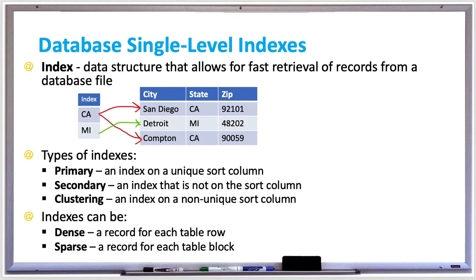Inserts, updates, and deletes to tables have an impact on single level indexes. With an insert, since a new row is added to the table, a new index entry needs to be created and placed in the right location. This involves moving things around, which could be time-consuming for large tables. To help speed this up, the database splits the index block and reallocates entries to the new block after creating space for the new entry.